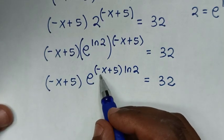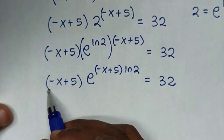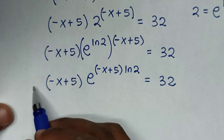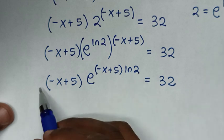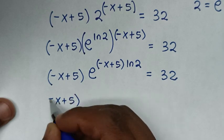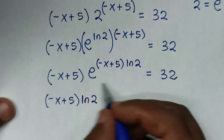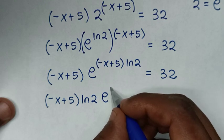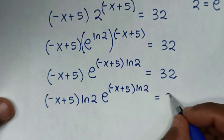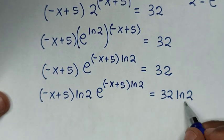In the power we have (negative x plus 5)·ln2, and in the base we also have (negative x plus 5). To get ln2 in the base as well, we multiply by ln2 on both sides. This gives us (negative x plus 5)·ln2 times e to the power of (negative x plus 5)·ln2, equal to 32·ln2.